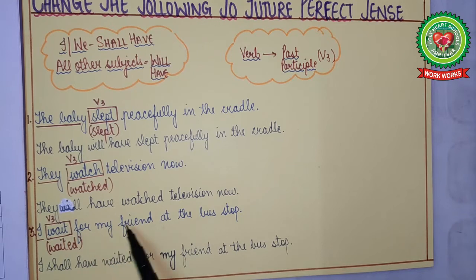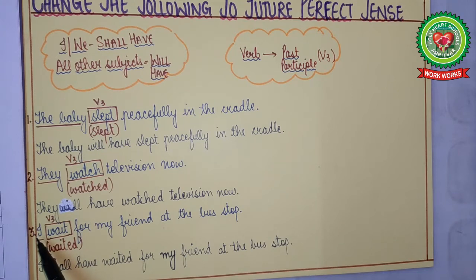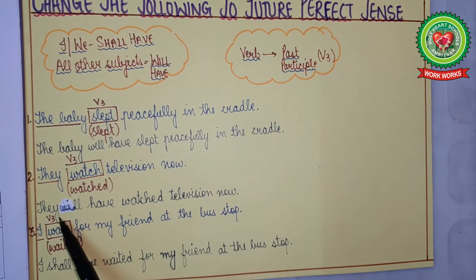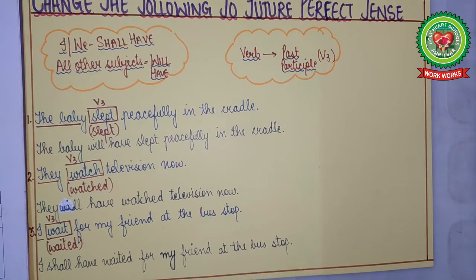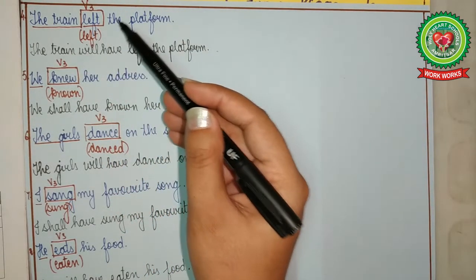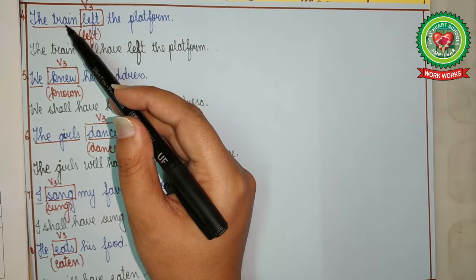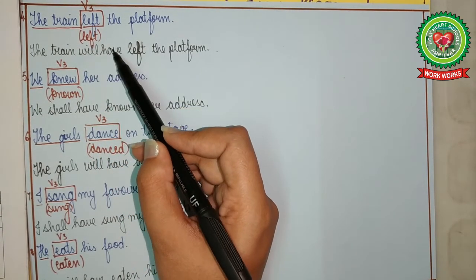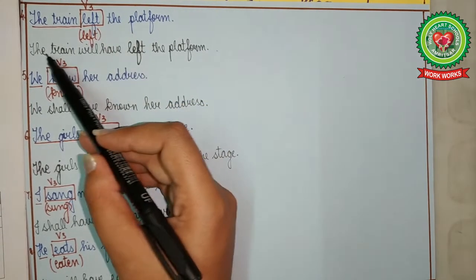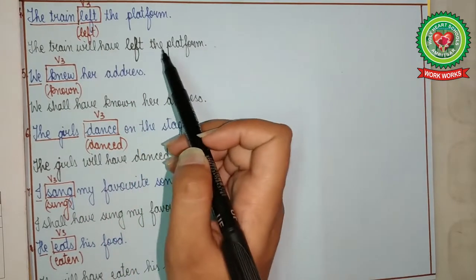'I wait for my friend at the bus stop.' Subject: I — shall have. Wait changes to waited. Answer: I shall have waited for my friend at the bus stop. 'The train left the platform.' Subject: the train — will have. Left stays left (V3). Answer: The train will have left the platform.